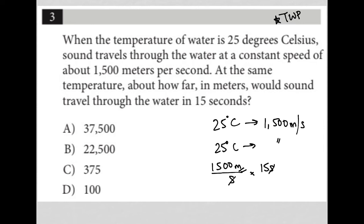This is the calculator section, so I do suggest throwing this into a calculator even if you feel the math is relatively easy. 1500 times 15 gives me 22,500.